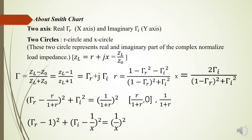Similarly, if we rearrange the expression of small x, we get the general expression for the X circle: (Rho_R minus 1) squared plus (Rho_i minus 1/x) squared equals (1/x) squared. This equation also represents a general circle with center at (1, 1/x) and radius 1/x.